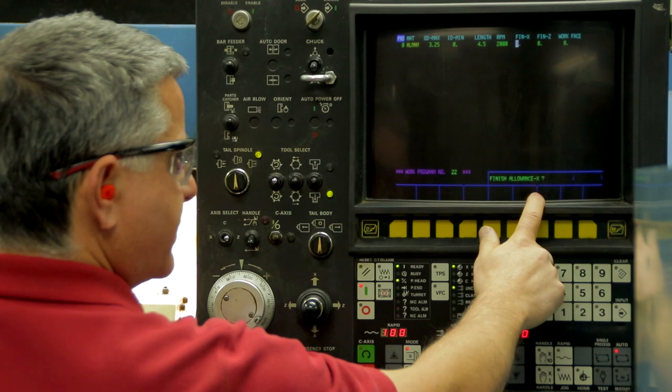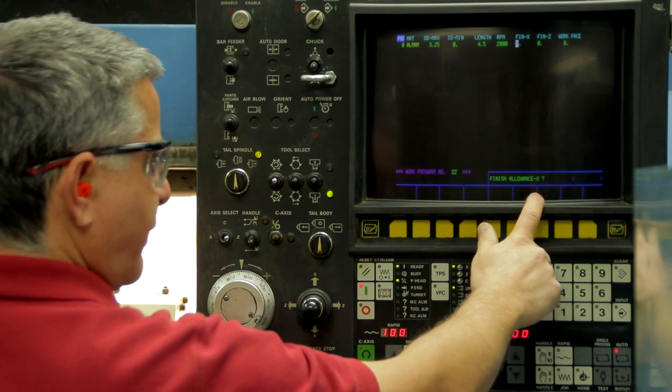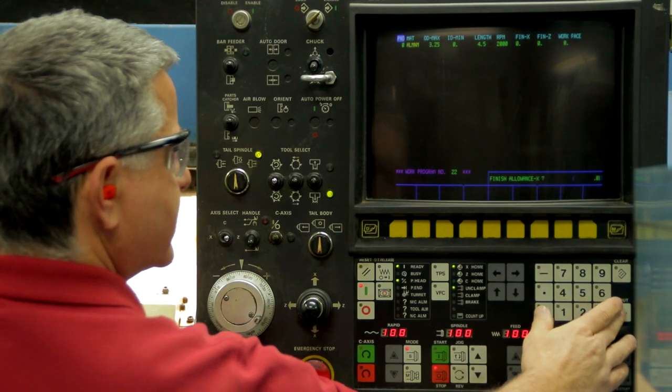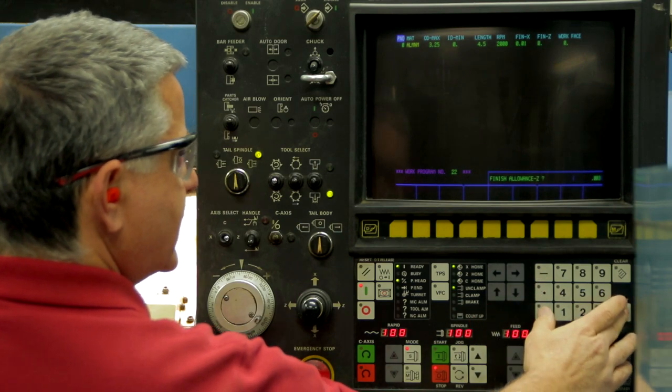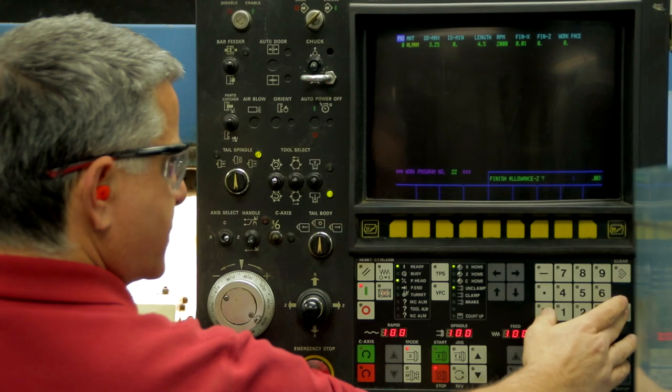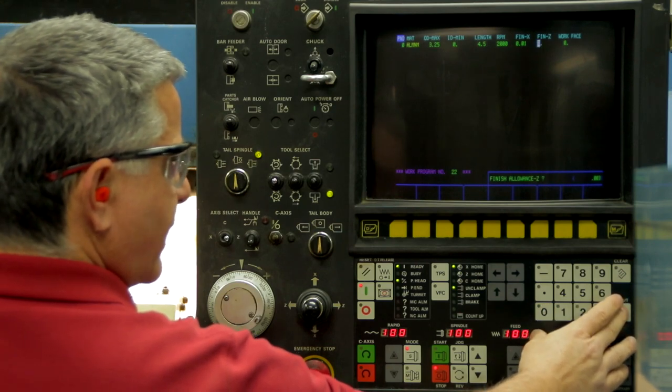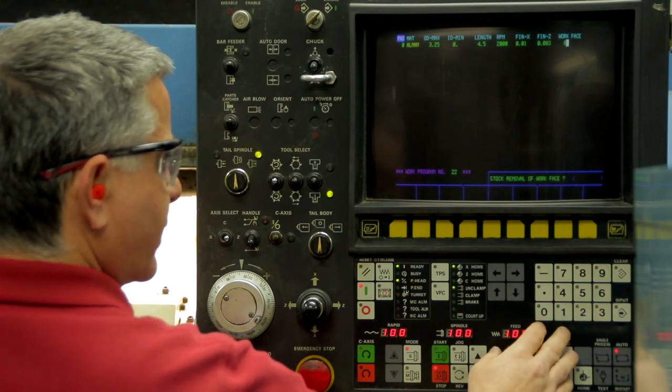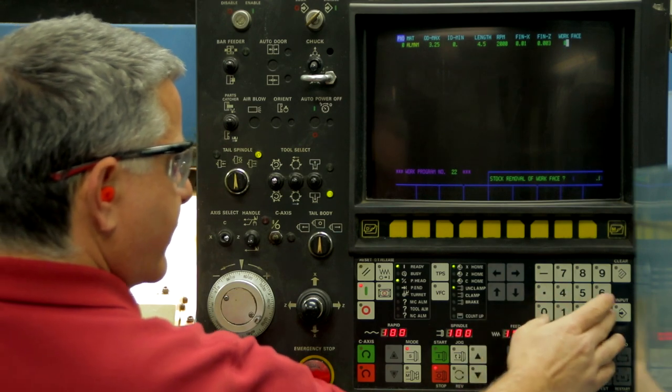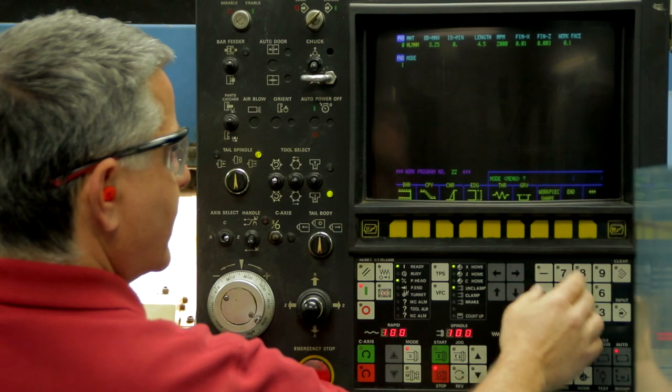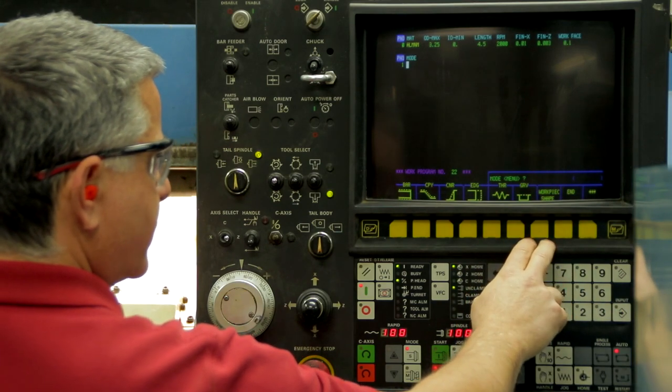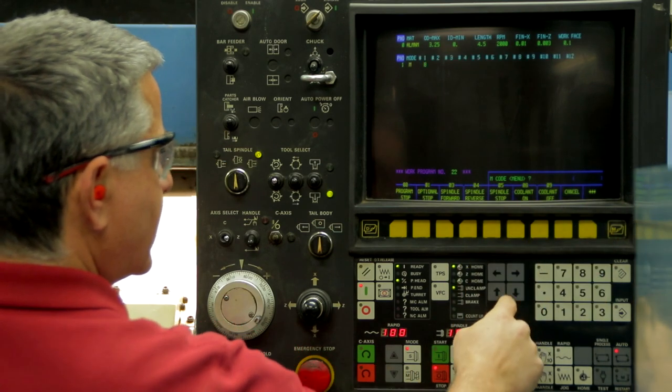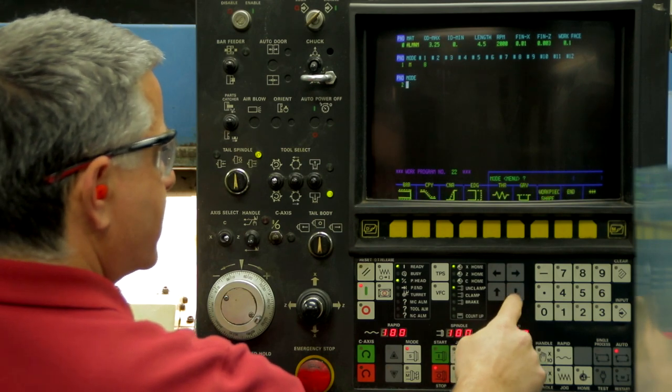This is the G50 for the entire program. You don't want to run the chuck past 2,000 RPM. Finish allowance on X. This is going to be the finish allowance the roughing tools leave for the finishers. I'm going to select ten thousandths, which is ten thousandths on the diameter for X. And then 0.003 thousandths on Z, because I'm going to be roughing the tool with a 55 degree diamond, and I want to leave less stock for the 35 degree diamond to finish. Stock removal of workface, I'm going to say 0.1 for 100 thousandths. And now the next thing we're going to do is turn on the cooler. Push the three arrows, M-code, coolant on. Again, that's 99% of the time we're turning on the coolant, it's the first operation.